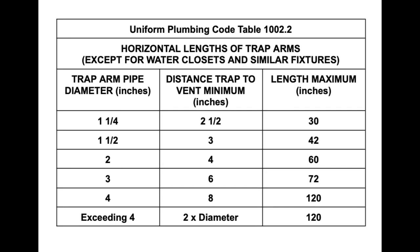The Uniform Plumbing Code also has limits on trap arm distances, contained in Table 1002.2 — Horizontal Lengths of Trap Arms, Except for Water Closets and Similar Fixtures. Once again we have three columns: the first is trap arm diameter (pipe size), the second is the minimum distance to the trap vent, and the third column is the maximum length of the trap arm. These are all measured in inches.